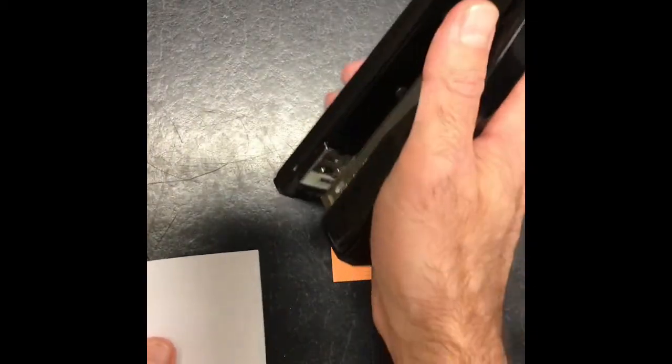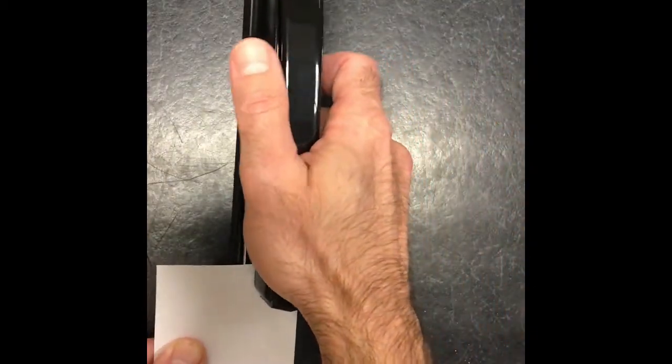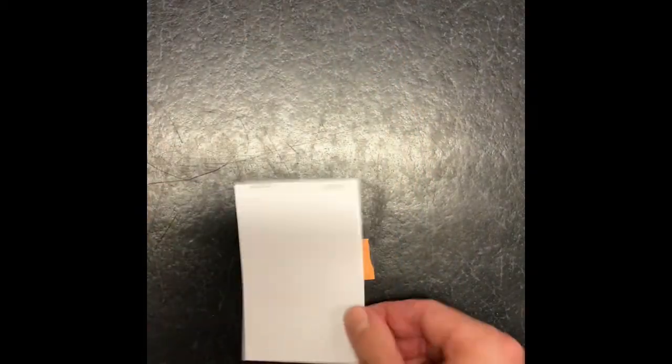Okay, now you can staple the top edge together or you can use glue if you don't have a stapler. Two pieces of paper, staple on the top edge. Alright.